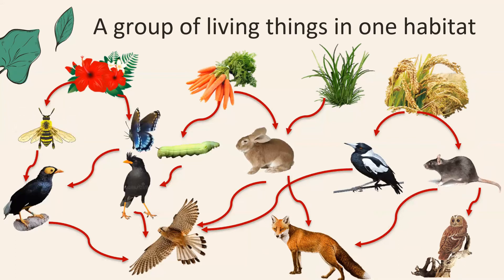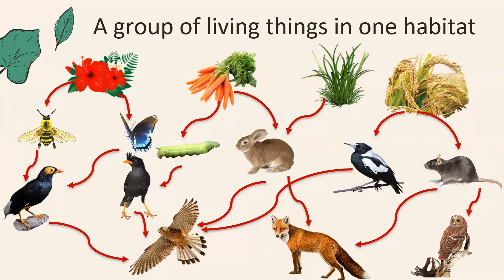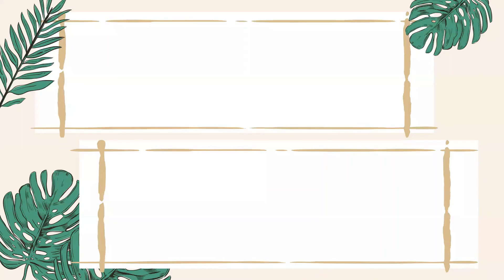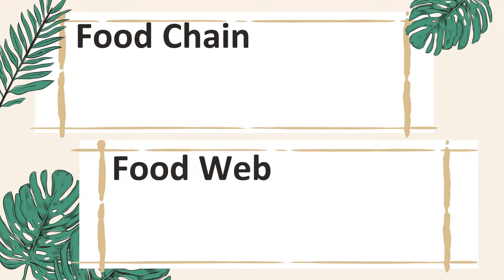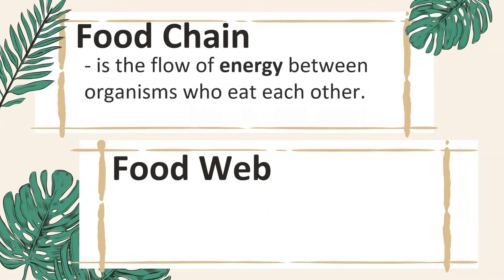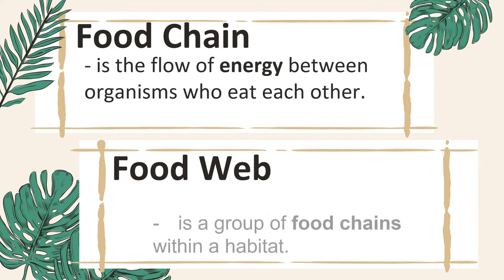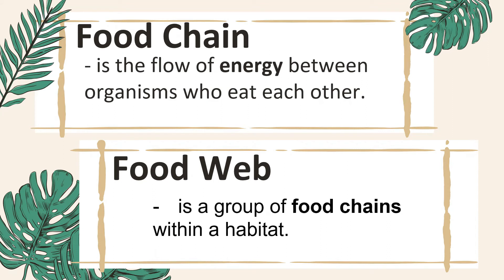Food webs are more realistic than food chains for showing how consumers and producers are interconnected in nature. To compare: a food chain is the flow of energy between organisms who eat each other, while a food web is a group of food chains within a habitat.